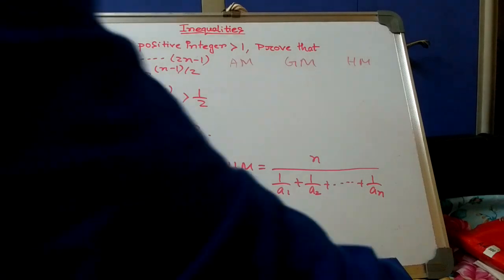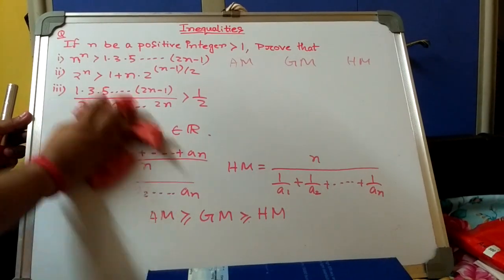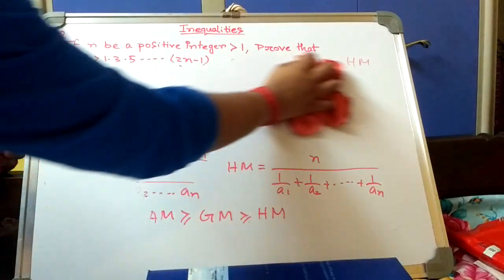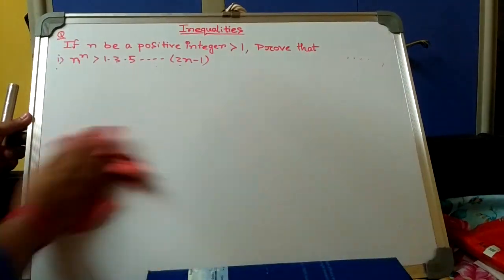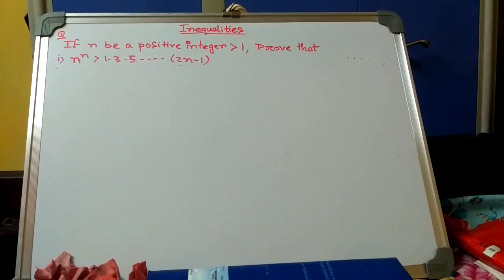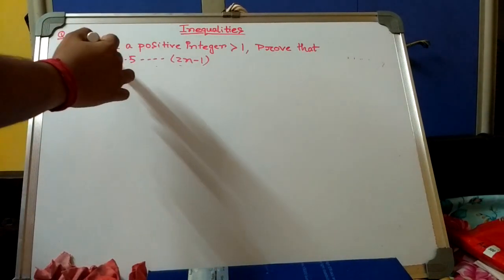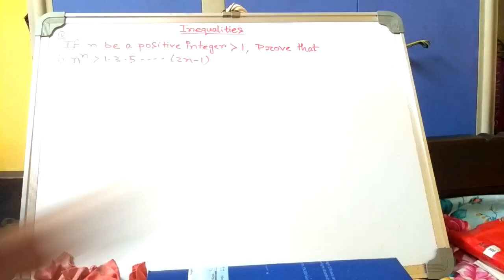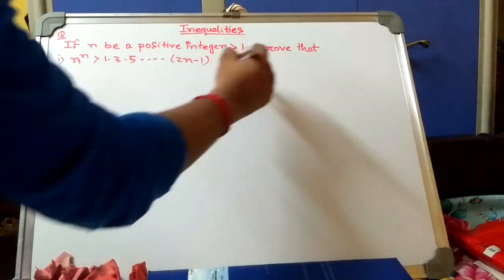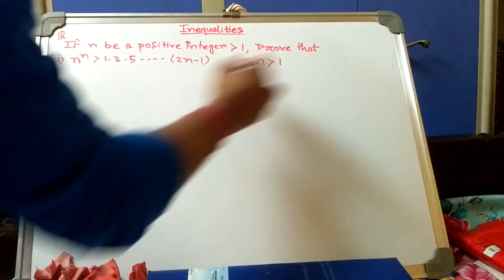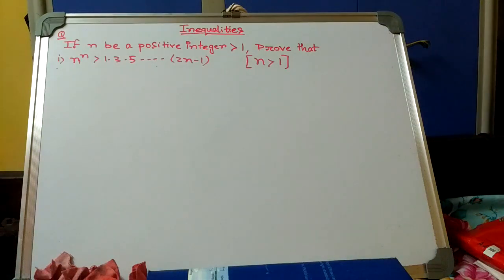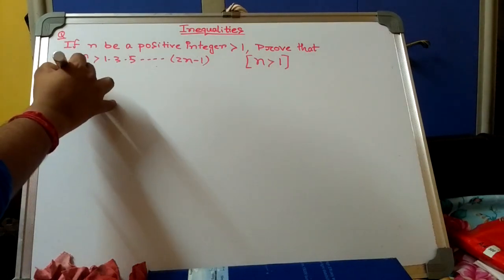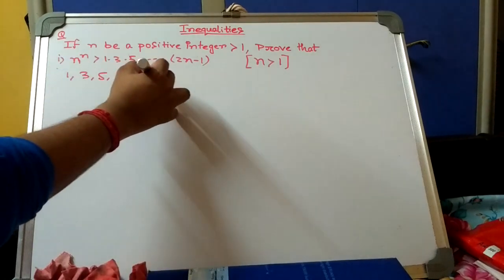The first problem is: n^n > 1 · 3 · 5 · ... · (2n-1)^(1/(n-1)). Our given condition is n > 1. To begin, consider the positive numbers 1, 3, 5, ..., (2n-1).